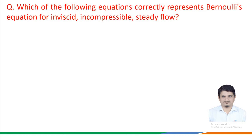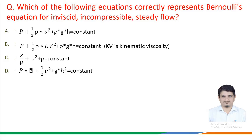Next question: which of the following equations correctly represents Bernoulli's equation for inviscid, incompressible steady flow? The four options given are: A. P + ½ρV² + ρgH = constant, B. an equation including kinematic viscosity (KV), C. P/ρ + V² + ρ = constant, D. P·ρ + ½V² + g·H² = constant.